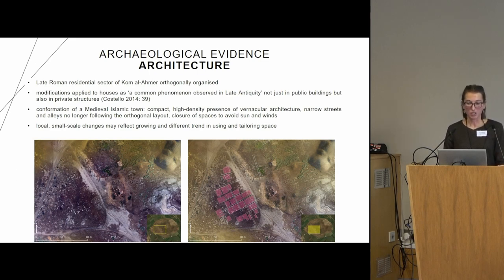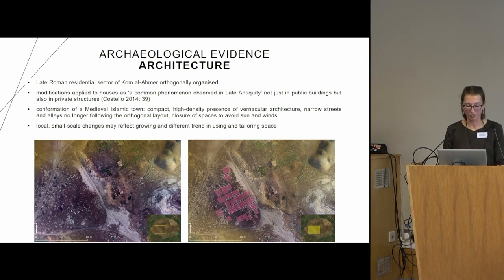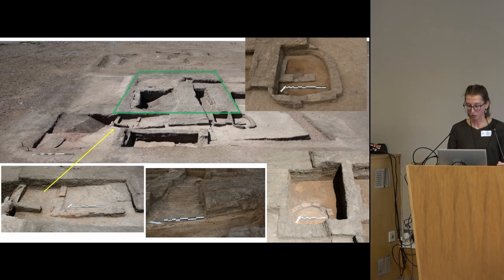Some of these changes were applied to the case study house. It's pivotal to highlight that the characteristics of a medieval Islamic town — at least in Egypt — were compact, high-density vernacular architecture with narrow streets and alleys no longer following the orthogonal layout, and closure of spaces to avoid sun and wind. So we see local small-scale changes reflecting growing and different trends in using and tailoring space.